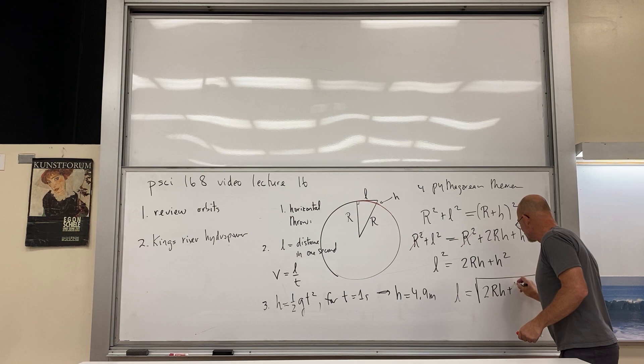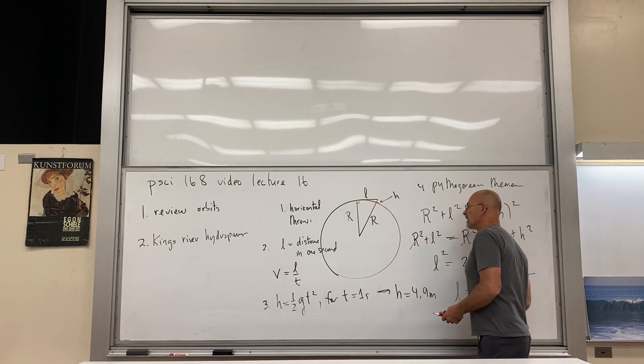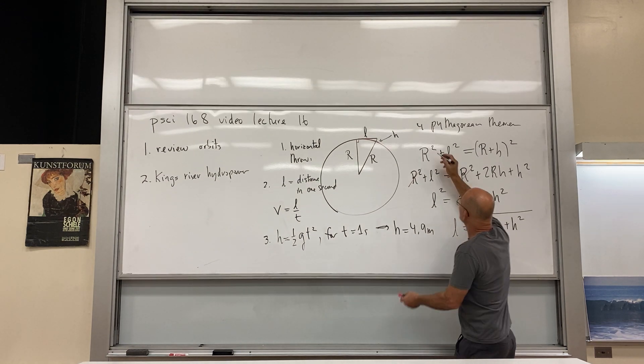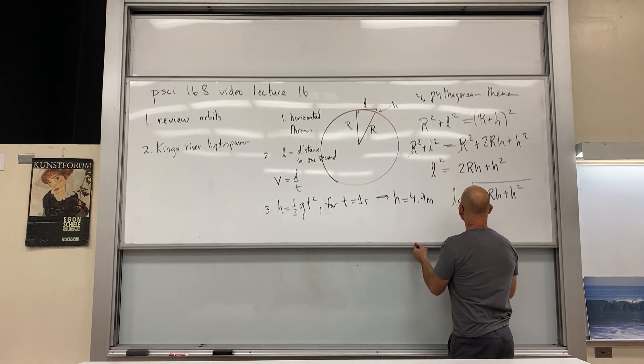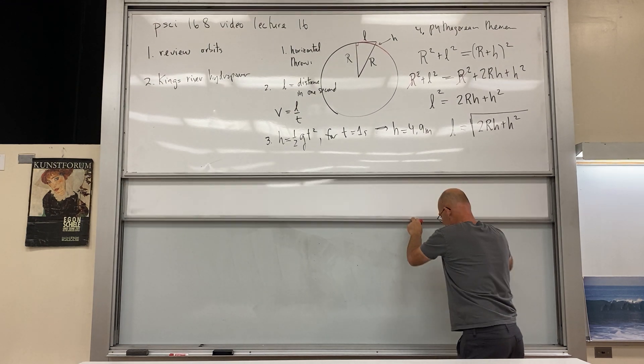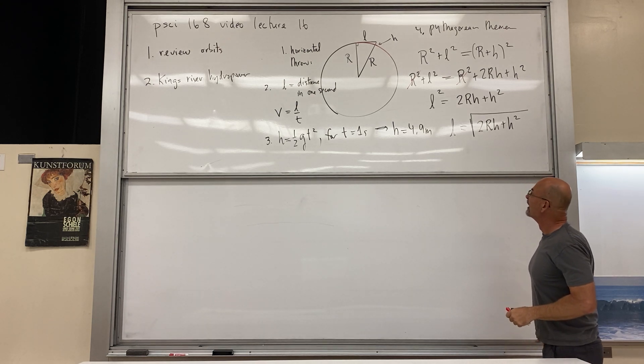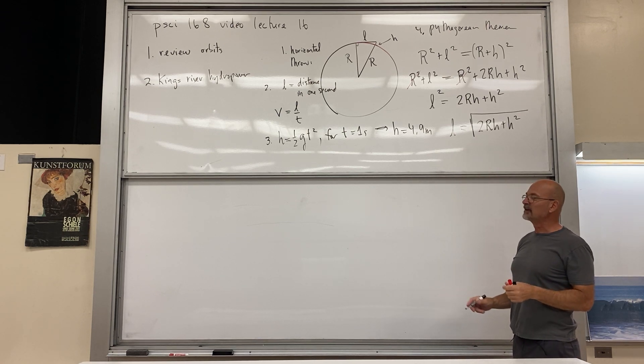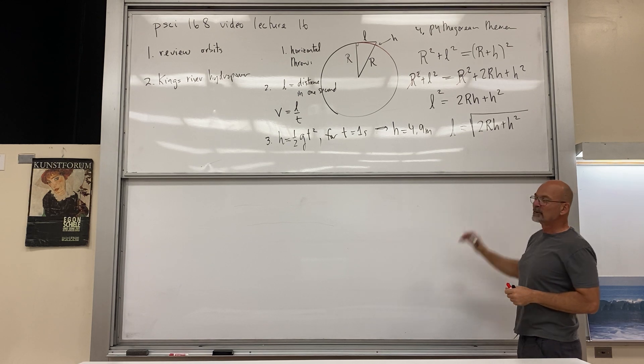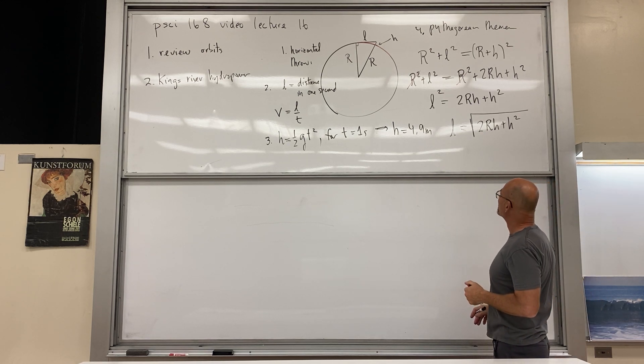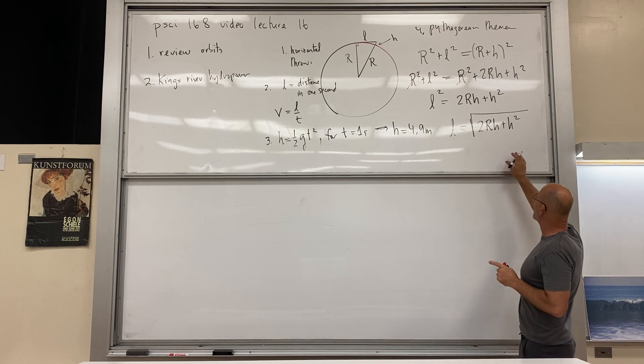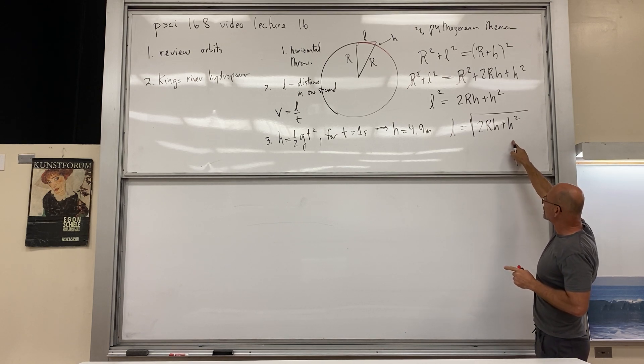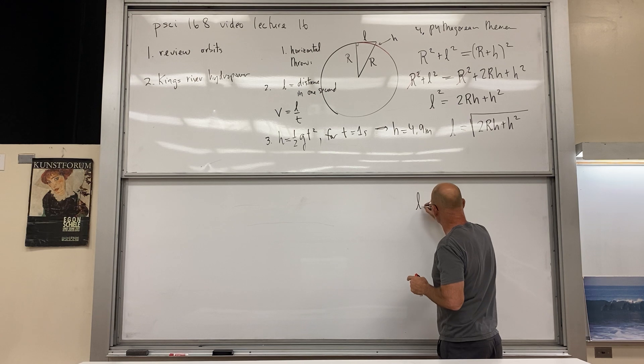So now l is equal to the square root of 2rh plus h squared. Here, right, we're numbering these things, so this was 0.4. Now we make an approximation, and it's an interesting fact that this approximation leads to an exact result. But for our purposes, we don't have to worry about that. h is so much smaller than r, than the radius of Earth, that we can neglect h squared.